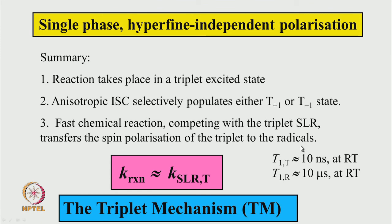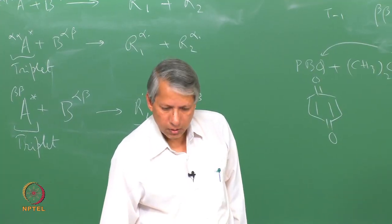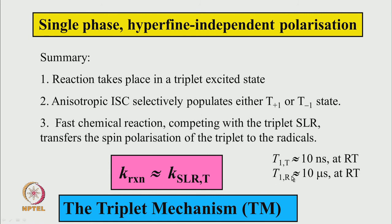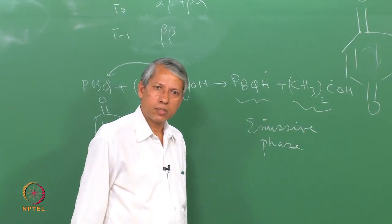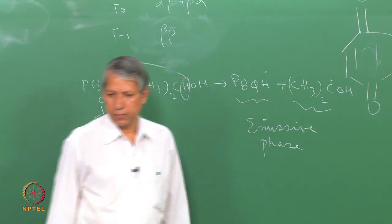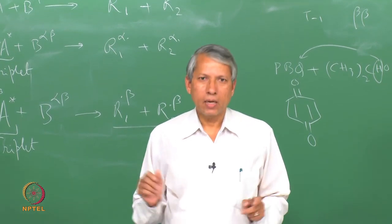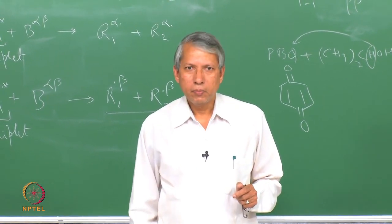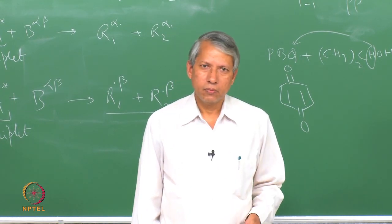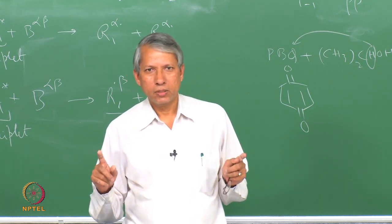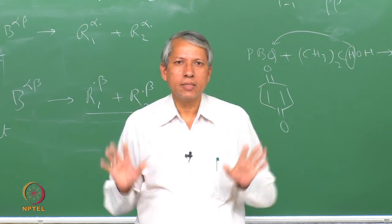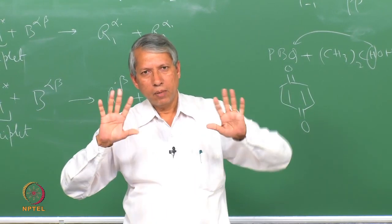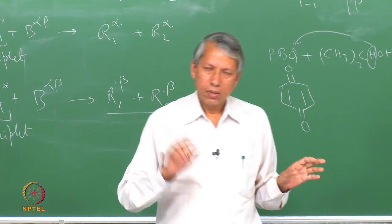Not all reactions are this fast — electron transfer or hydrogen transfer reactions are fast enough to compete. The spin-lattice relaxation of radicals is mostly in the microsecond range, so the radicals maintain their spin polarization for several microseconds, enough for the time-resolved EPR spectrometer to record it. This mechanism, centered around the triplet state involvement in the photochemical reaction, is called the triplet mechanism of electron spin polarization. Its characteristic feature is that both radicals give the same type of spin polarization — either totally absorptive or totally emissive — independent of nuclear spin state.